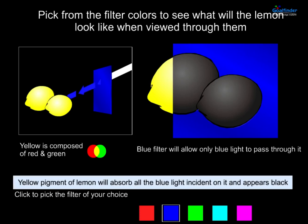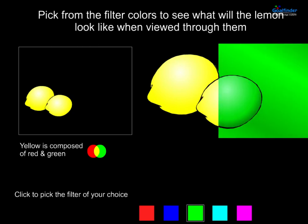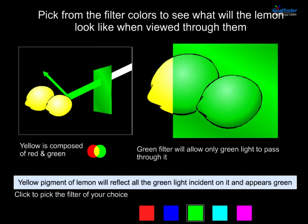Now let's pick up the blue filter. The blue filter will allow only blue light to pass through it. The yellow pigment of the lemon will absorb all the blue light incident on it, and it appears black.